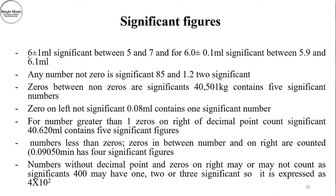If a value is written as 6 ± 1, the accuracy lies between 5 and 7. Written as 6.0, accuracy is ±0.1, meaning between 5.9 and 6.1. Any non-zero digit is significant — so 82 has two significant figures, and 1.2 also has two. Zeros between non-zero digits are significant, so a number like 10203 has five significant figures.